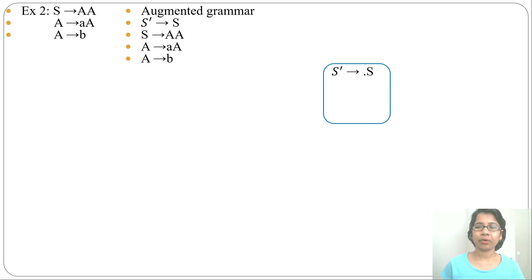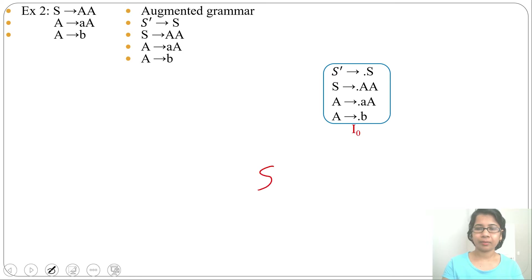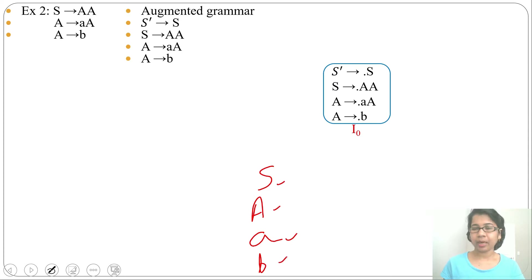Next we need to create the LR automation. The first production will be S' → •S. When there is a dot before S, we find the closure of S, so we write: S → •AA. There is a dot before A, so we write A → •AA and A → •B. We assign state name I0. The dot before each symbol means four transitions from I0: on S, on A, on terminal a, on terminal b.